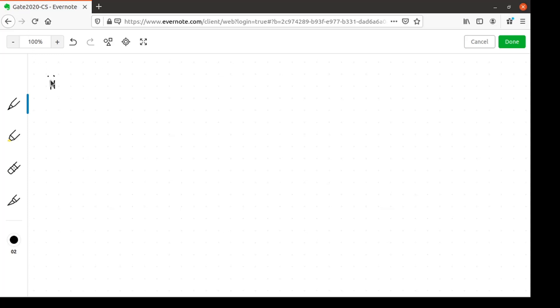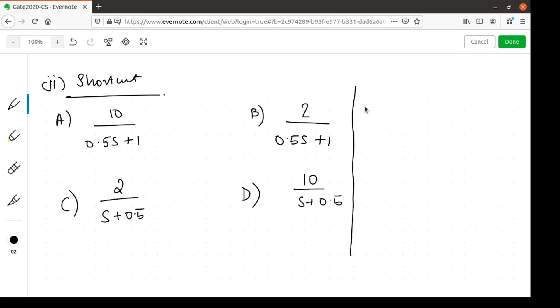Now, let us look at a shortcut method to solve the problem. First, let us look at the options again. We know that the output of the system omega of s is the transfer function g of s times the input of the function v of s.